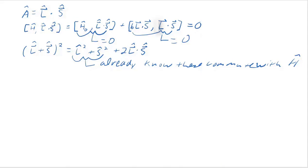So the sum, L plus S, when squared, is conserved. And it has a special name, J.